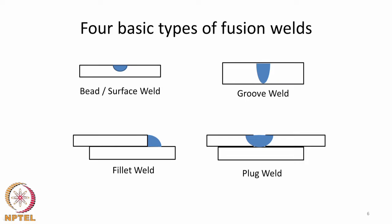We can also classify joints by the extent of weld penetration. Bead or surface welds involve moving the welding torch along the surface and are generally used for low-thickness materials with minimal edge preparation. For thicker materials, a groove weld is needed. A fillet weld is used in a lap geometry where the junction between two plates is joined using a filler. A plug weld is similar to a spot weld where a localized melt zone joins the two materials.